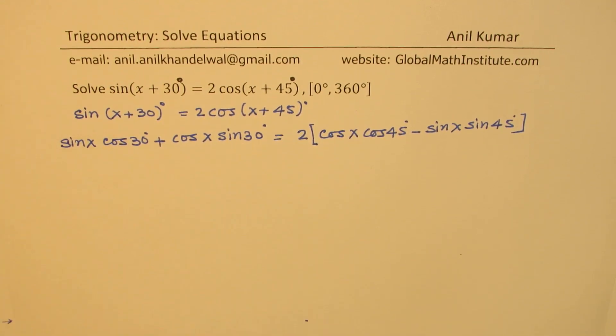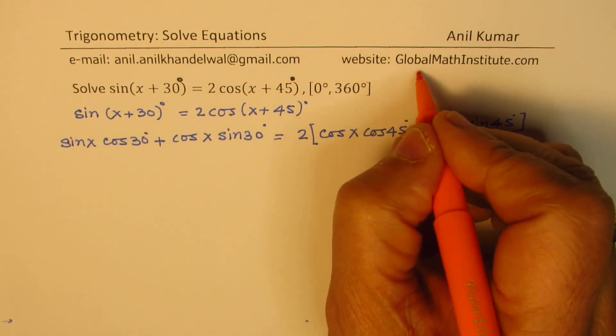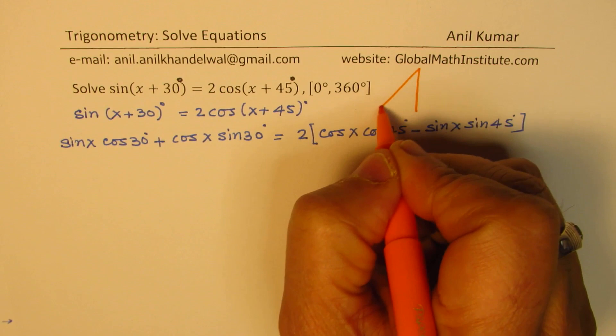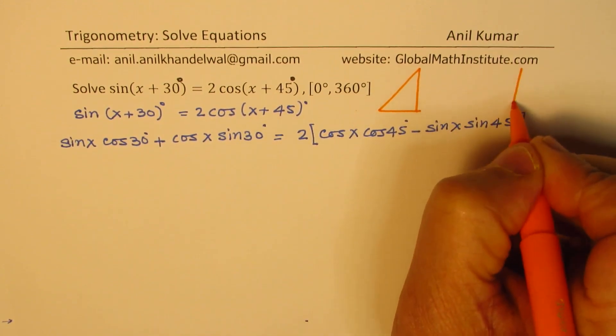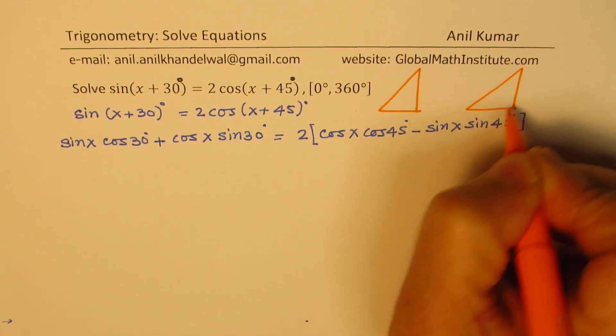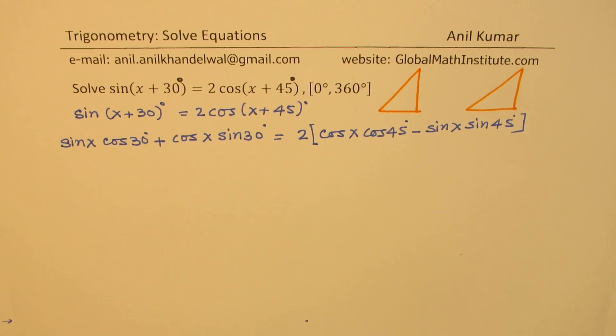Now we know the values of sine and cosine, or you can use special triangles. Let me sketch the special triangles here for your reference. So we'll sketch two special triangles.